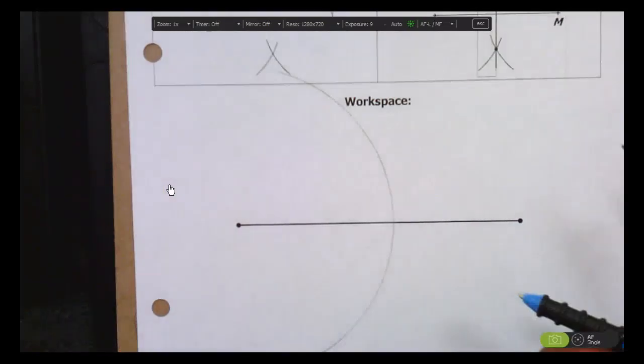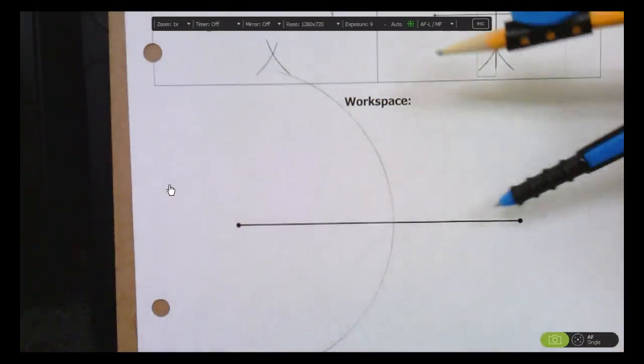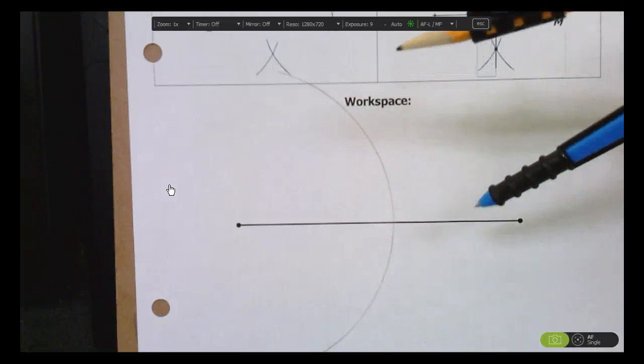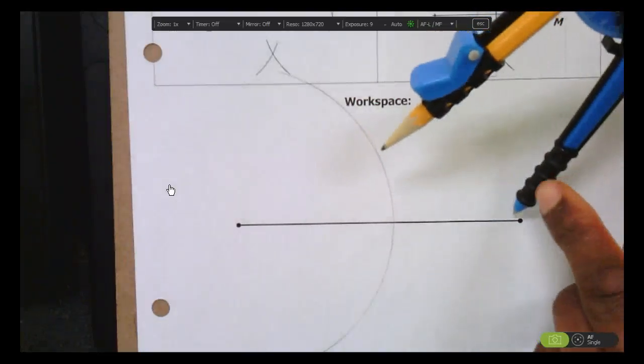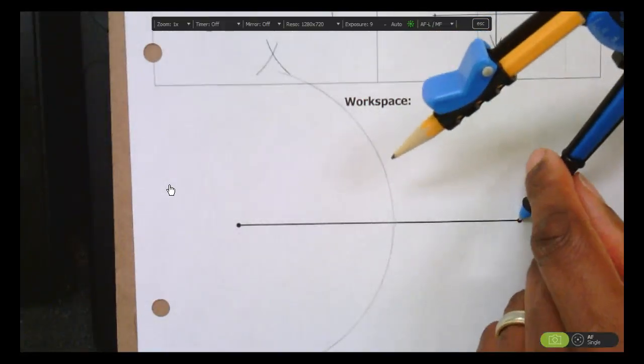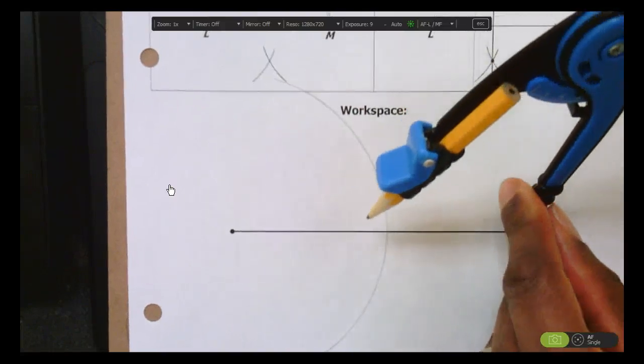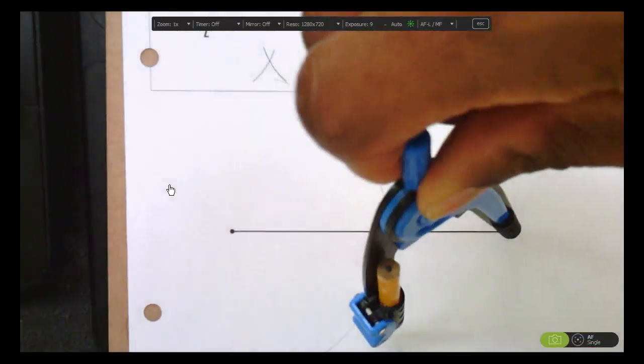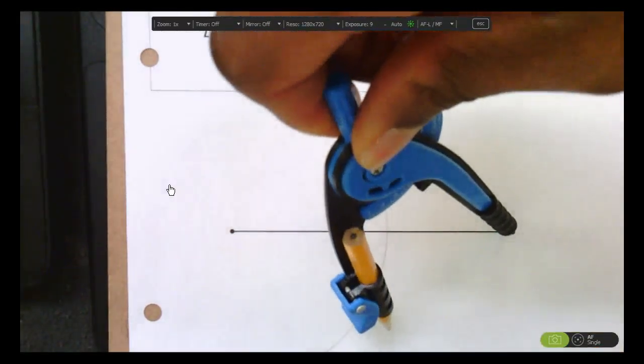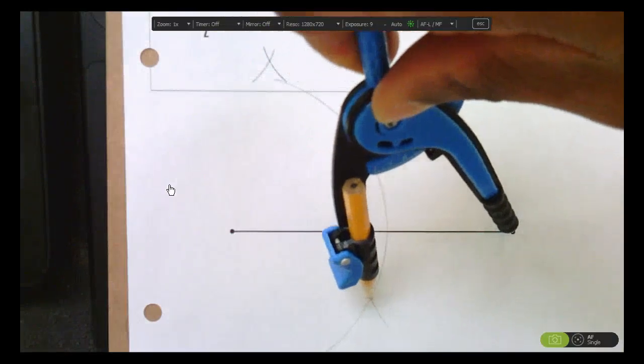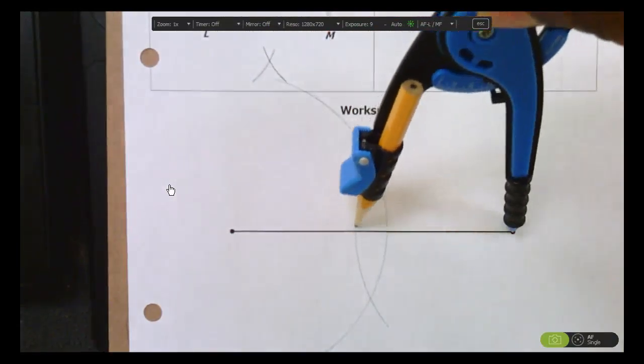And then we're just going to switch sides. Don't change the size of your compass. Just leave the size of your compass exactly the same. Just move the point of your compass to the other endpoint and then go ahead and draw an arc that will intersect your first arc in two places like this.